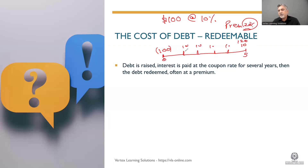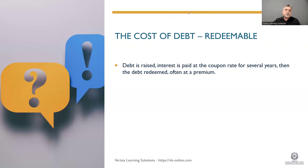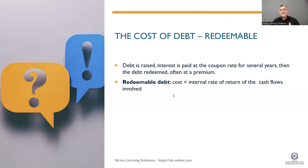You will discount the cash flows at your discount rate — five percent, six percent, eight percent, whatever — and when you discount them you find out your IRR. So redeemable cost of debt is the internal rate of return of the cash flows, always a more complicated calculation, and this is more common in exams because irredeemable was very easy.